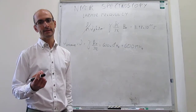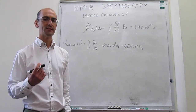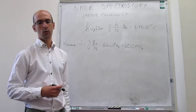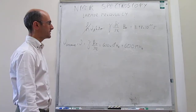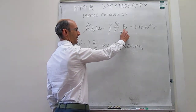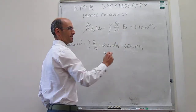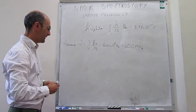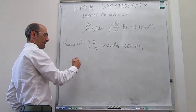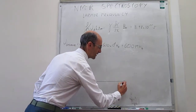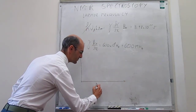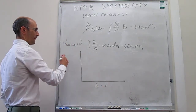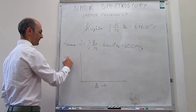It is important to recognize that the strength of the magnetic field affects where the peaks appear. If you have a large external magnetic field, the energy states will be much more separated than with a small magnetic field. This can be shown with a graph where we increase the strength of the magnetic field along one axis and plot the energy separation between the alpha and beta spins.